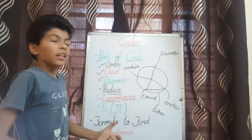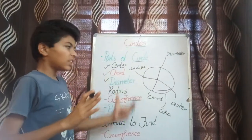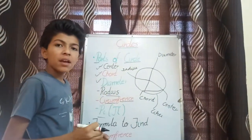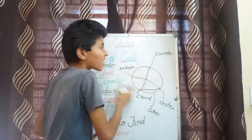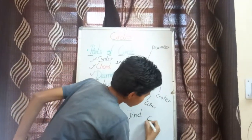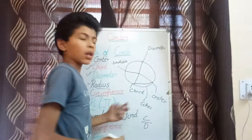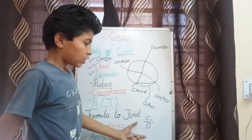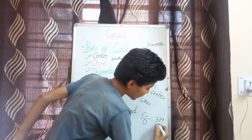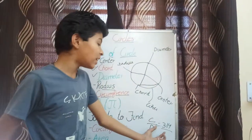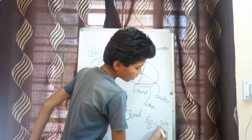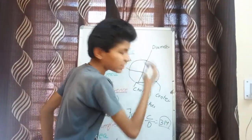So friends, those were all the parts of a circle. Now in this video, we are going to learn about pi. What is pi? Pi is the ratio between the circumference and the diameter of the circle — it is C divided by D, where C stands for circumference and D stands for diameter. If you calculate this, it gives approximately 3.14. This is an estimation because pi has an infinite number of decimal values, which is why we use it up to 2 decimal places.